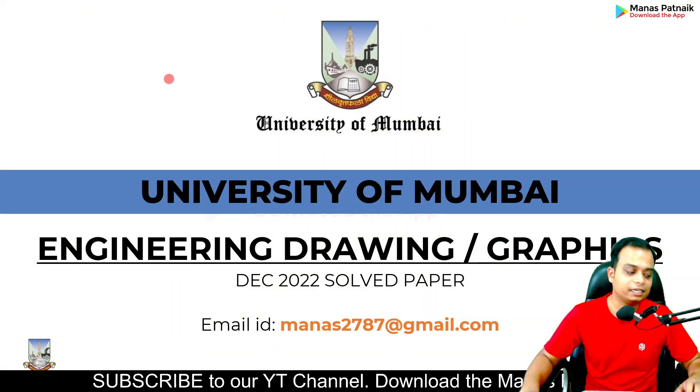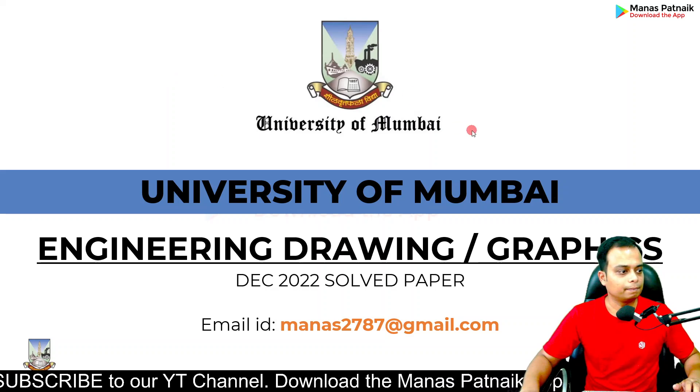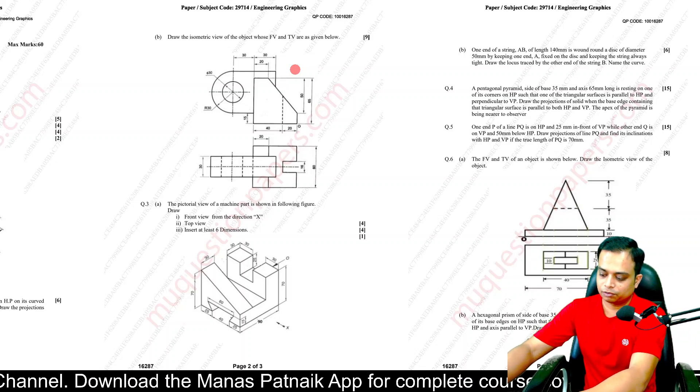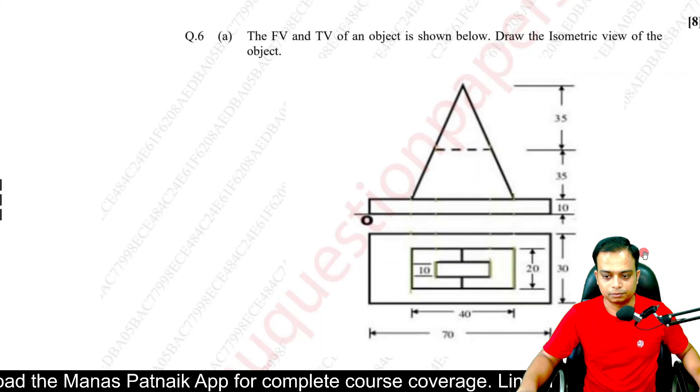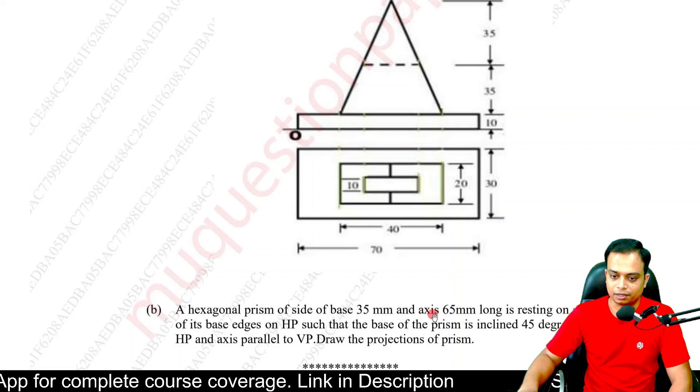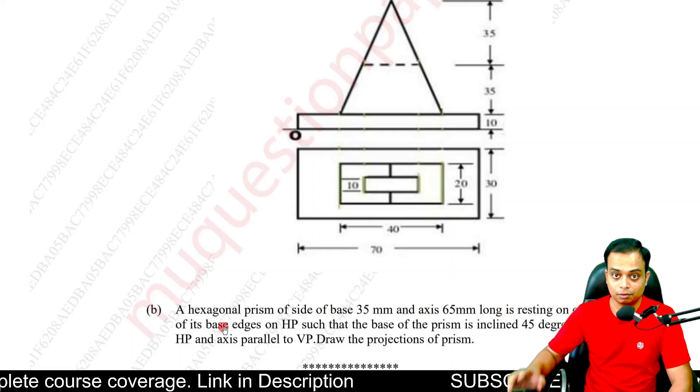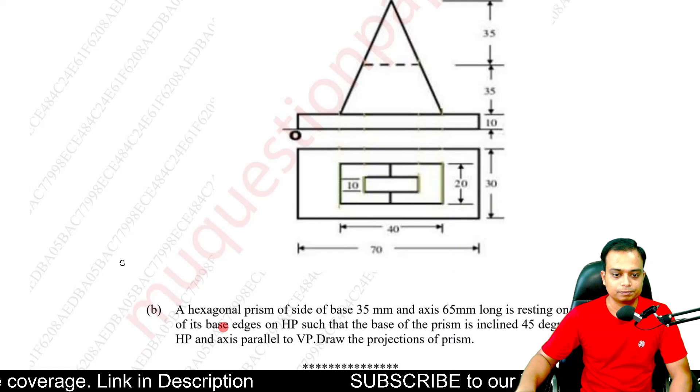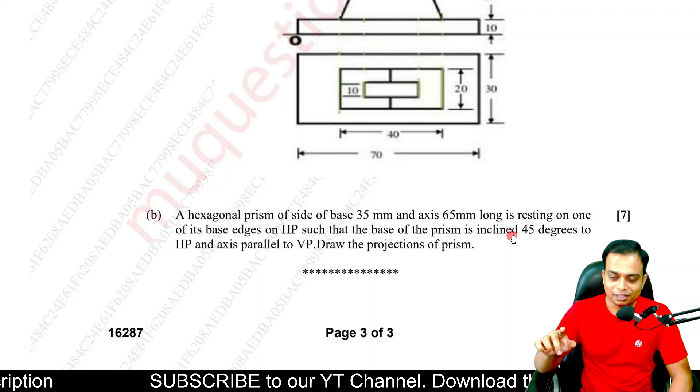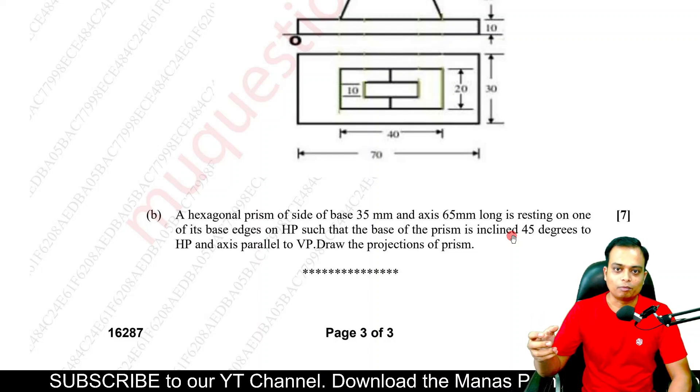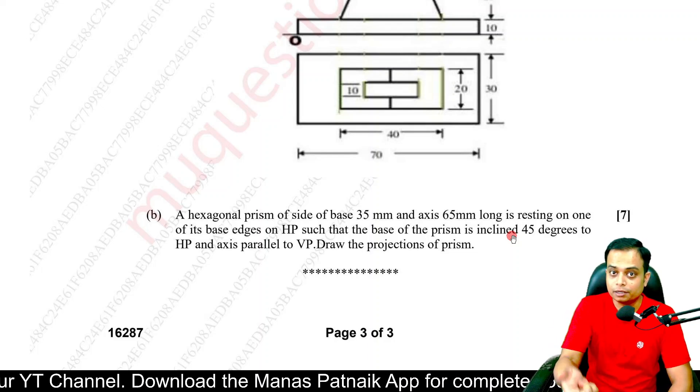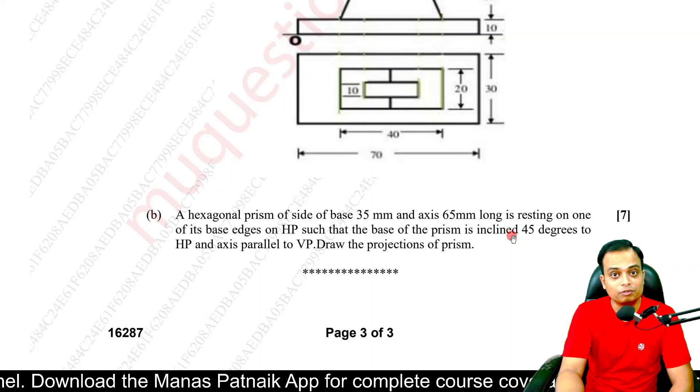It would be better if I can switch to the slide mode. Let's read the problem's description. There is a hexagonal prism with a side of base 35mm and axis 65mm long, resting on one of the base edges. Very important point—resting on one of the base edges on HP such that the base of the prism is inclined. Look here, the base inclination has been given. In most problems, 99% of the problems, you will see that the axis inclination is given, either with respect to HP or VP. Here this is slightly different—base of the prism, okay, base inclination has been given.